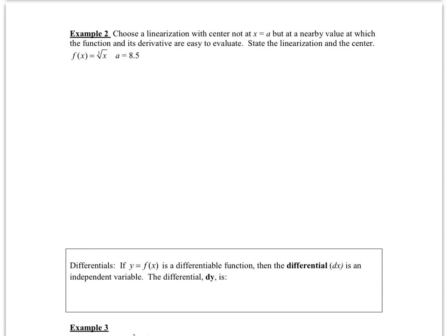The next example is a little different: it asks you to choose a linearization centered not at x equals a but at a nearby value where the function and derivative would be easy to evaluate. For f of x equals the cubed root of x starting at x equals 8.5, the cubed root of 8.5 is not easy to evaluate. So think of an x value close to 8.5 that would be easy. Hopefully you chose a equals 8, since 8 is easy to take the cube root of.